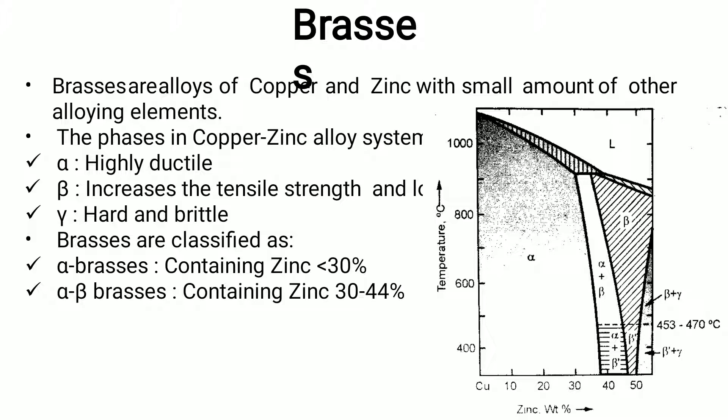Brasses are generally classified as alpha brasses, which contain zinc less than 30%, and alpha-beta brasses, which contain zinc in the range of 30 to 44%.